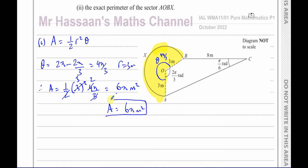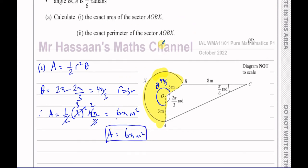The area is 6π metres squared. They want the exact area, so you don't find the decimal value — you leave it in its exact form. That's very important to understand.